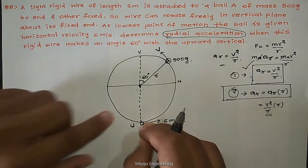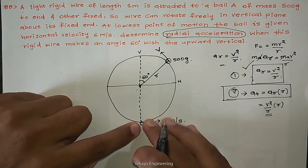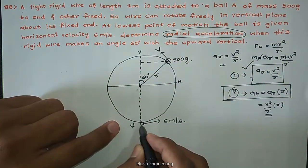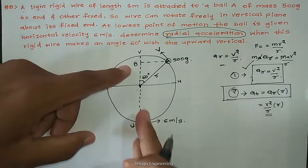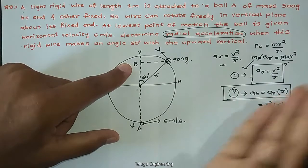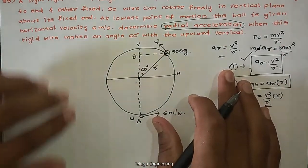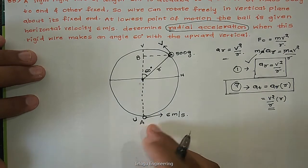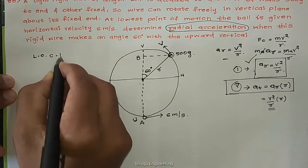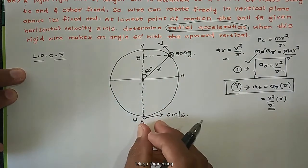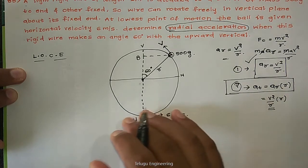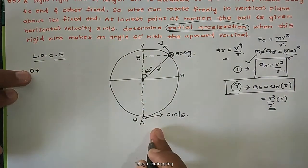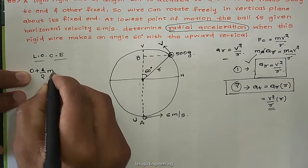We apply conservation of energy. Taking the bottom point as the ground level, the potential energy there is zero. The kinetic energy at the bottom is half m u squared, where the initial velocity u equals 6 meters per second. At point B, where the wire makes 60 degrees with the upper vertical, the ball has both kinetic energy half m v squared and potential energy mgh, where h is the height AB.